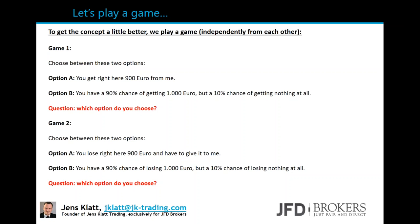So I start working with examples which are the same as trading. It's a very simple game with two questions. The two games don't interact with each other — they're independent, and you play each just once. Game one: you can choose between two options. Option A — I give you 900 euros right here, you don't need to do anything for it. Option B — you have a 90% chance of getting 1,000 euros, but a 10% chance of getting nothing at all. Which do you choose?